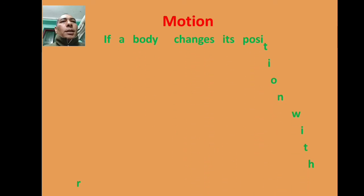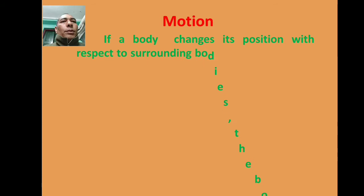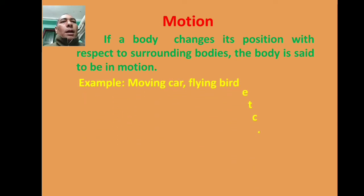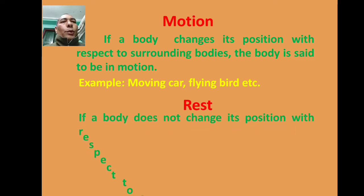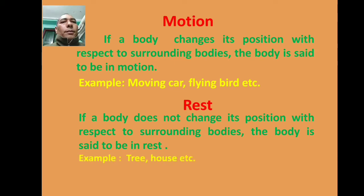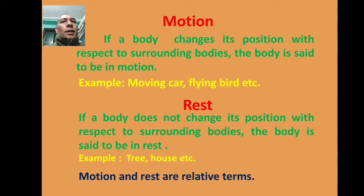Motion: If a body changes its position with respect to surrounding bodies, the body is said to be in motion. Examples: a moving car, a flying bird. Rest: If a body does not change its position with respect to surrounding bodies, the body is said to be in rest. Examples: a tree, a house. Motion and rest are relative terms.